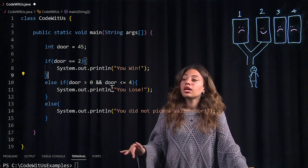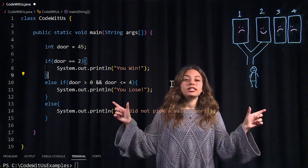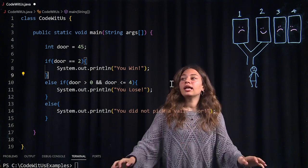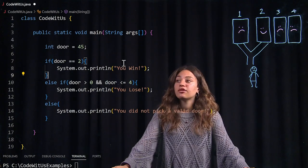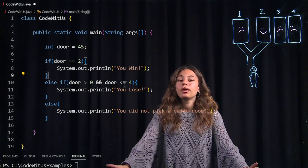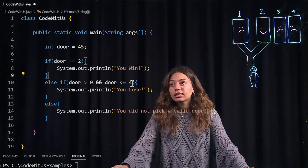So this basically is connecting two conditional statements into one and the only way for this entire conditional statement to be met is if both conditions are true, i.e. the door is greater than zero and the door is less than four.